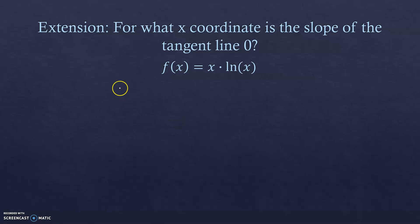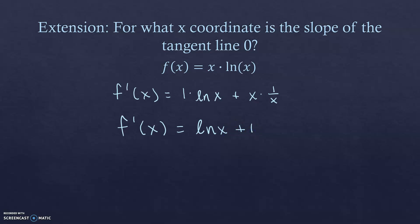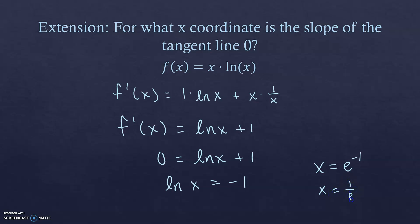Extension problem: for what x-coordinate is the slope of the tangent line zero? For f(x) = x·ln(x), apply the product rule: f′(x) = ln(x)·1 + x·(1/x) = ln(x) + 1. Setting f′(x) = 0 gives ln(x) = −1, so x = e⁻¹ = 1/e. You can also solve by exponentiating both sides.